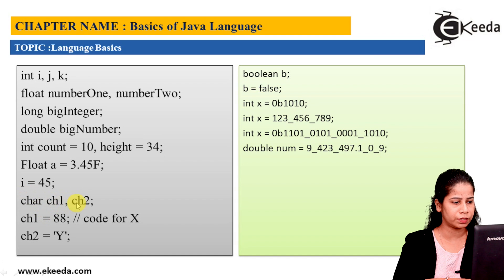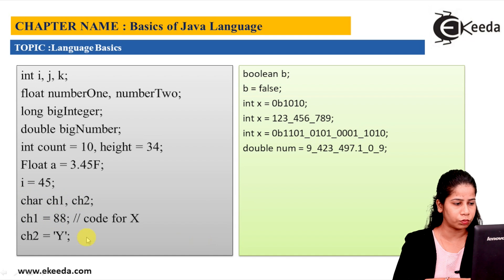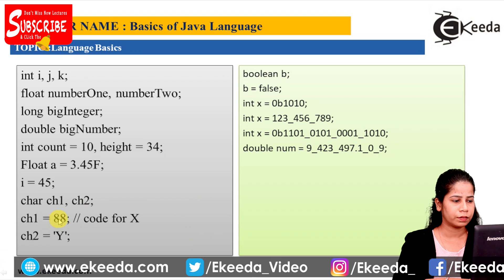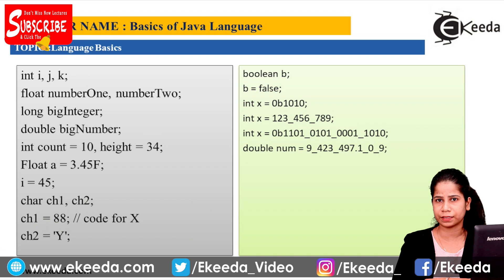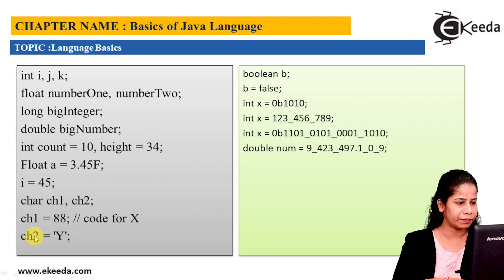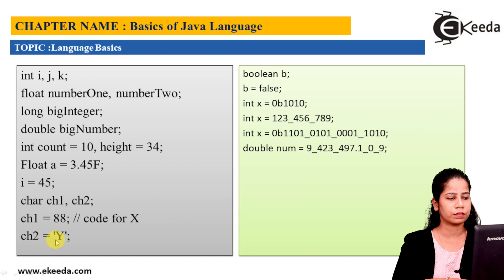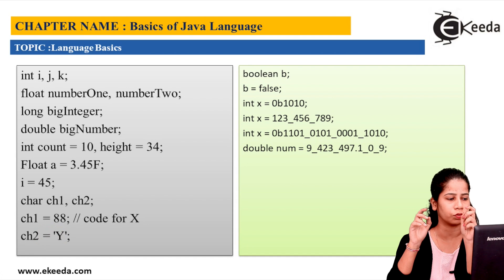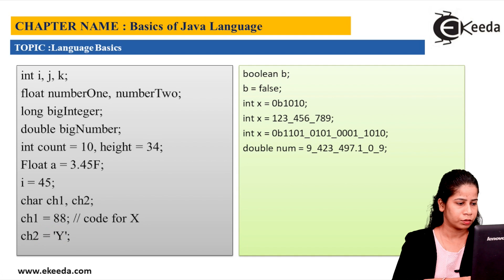For character data type: char ch = 88. Here, 88 is the ASCII value of the character 'X' in English — approximately 127 characters each have an associated integral ASCII value. Then char ch2 = 'Y'. Always remember characters are written in single quotes and only one character is allowed at a time. For boolean: boolean b = false.